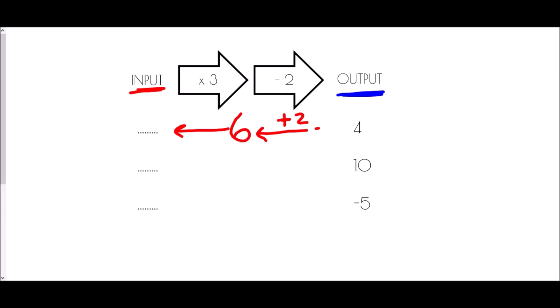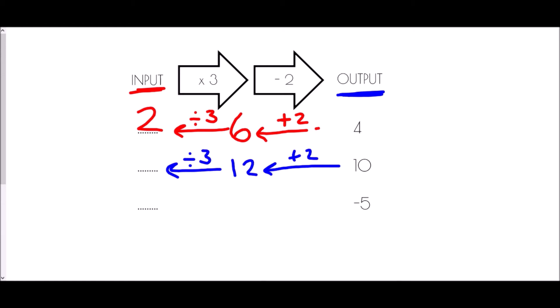The next arrow says multiply by three, so the opposite operation is dividing by three. Six divided by three is two. If we try again with an output of ten: ten plus two gives twelve, and twelve divided by three is four.